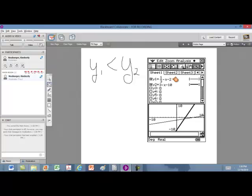In order to find out when y1 is less than y2, we want to look for when this thin line is below the thick line. And notice that the thin line is below the thick line right in here.